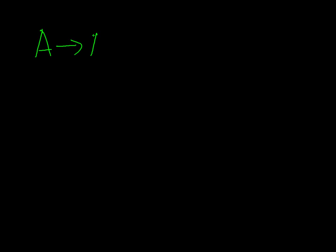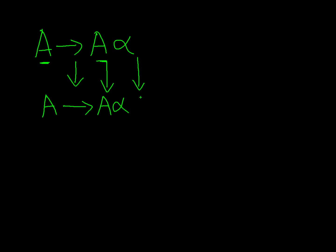A production of the type A produces A-alpha contains left recursion — the symbol on the left-hand side is the first symbol on the right-hand side. In place of this A, we can write A-alpha and bring that alpha down again, and we can keep writing this. We'll get A with alpha repeated many times. Let's see how to remove left recursion with an example.